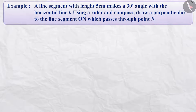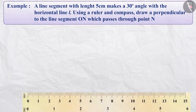Next example. A line segment of length 5 cm makes a 30 degree angle with the horizontal line. Using a ruler and a compass, draw a perpendicular to the line segment O-N which passes through point N.